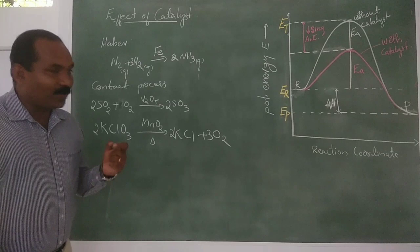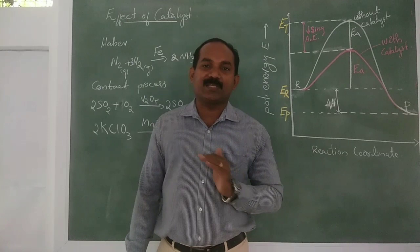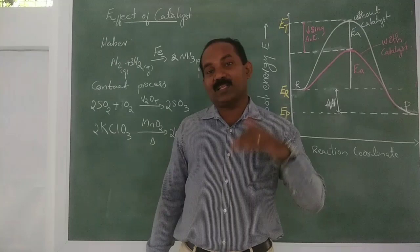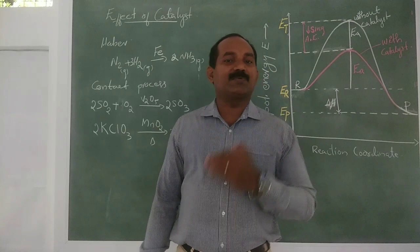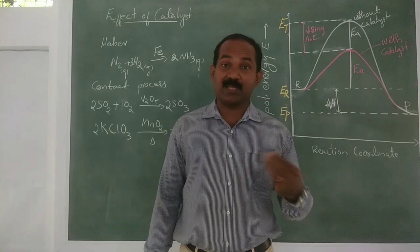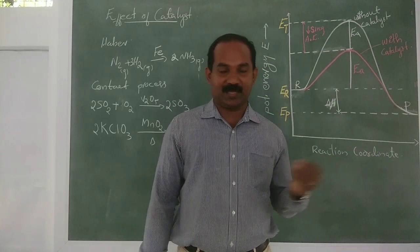A catalyst that increases the rate is called a positive catalyst. A catalyst that decreases the rate is called a negative catalyst. We will discuss the mechanism of catalysts, different types — heterogeneous, homogeneous, shape-selective catalysts — in the next chapter.